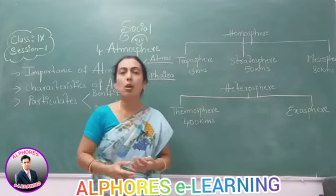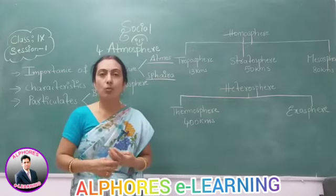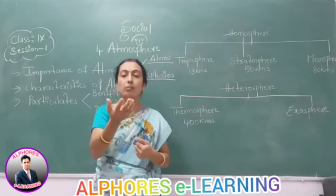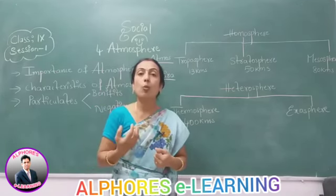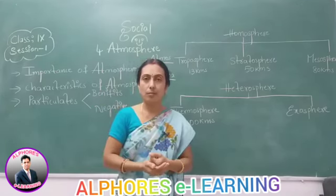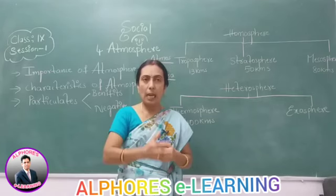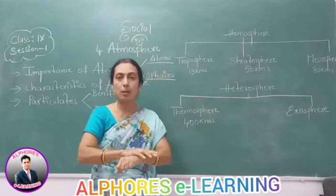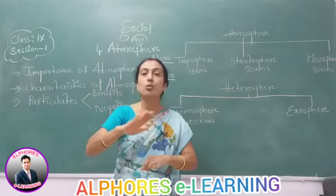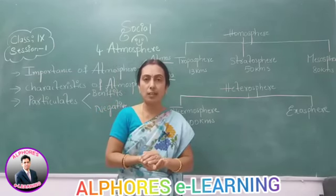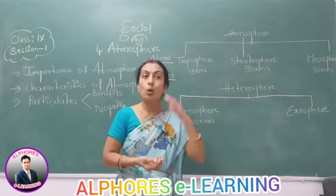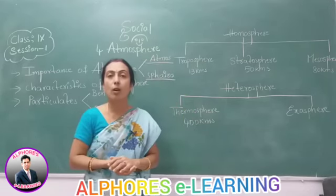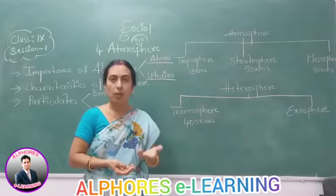Next, ozone is one of the important gases present in the atmosphere. The sun emits ultraviolet rays, which are dangerous. If those ultraviolet rays fall on us directly, it leads to different varieties of skin cancers in human beings. So the ozone layer protects us from the sun's ultraviolet rays.